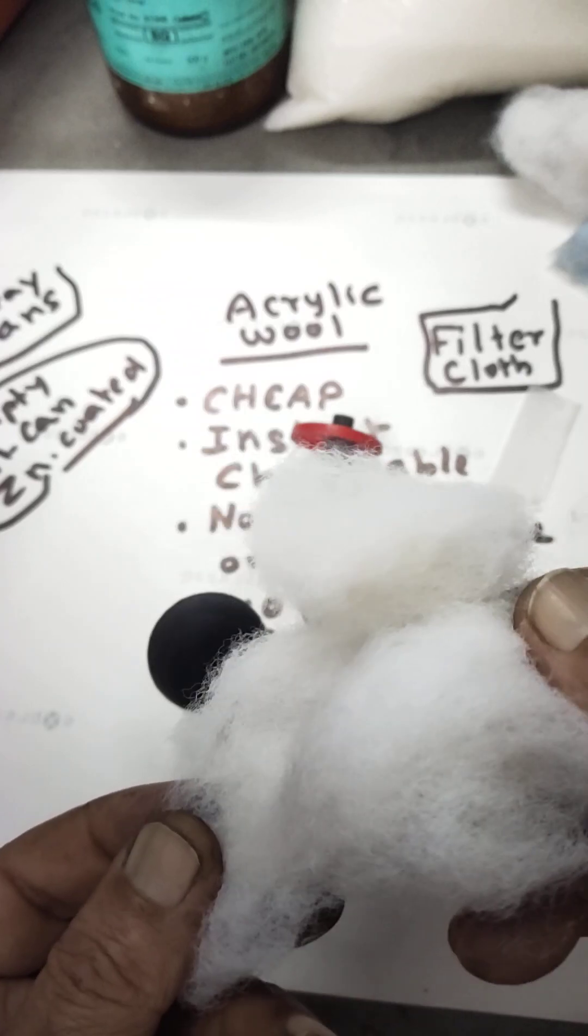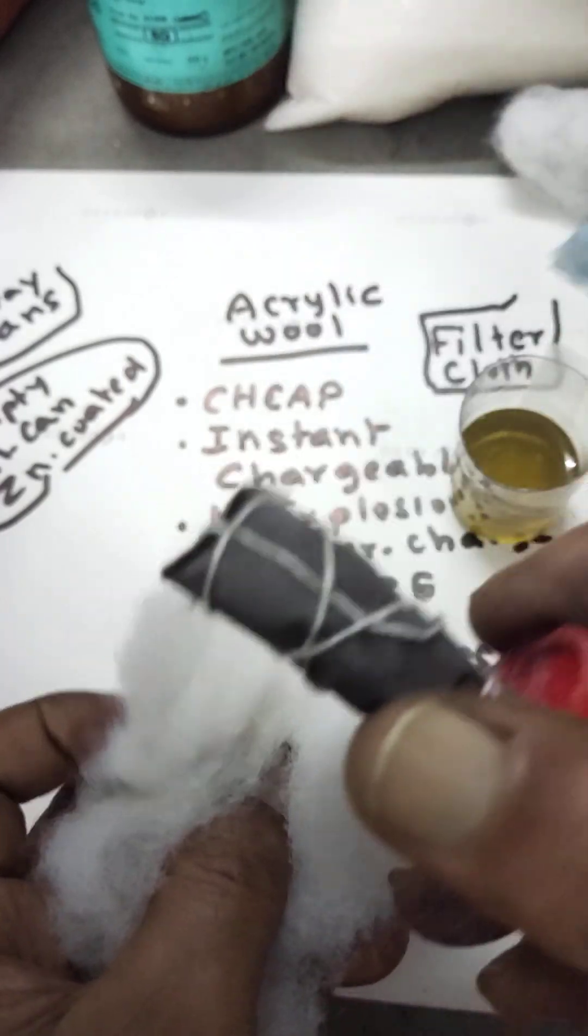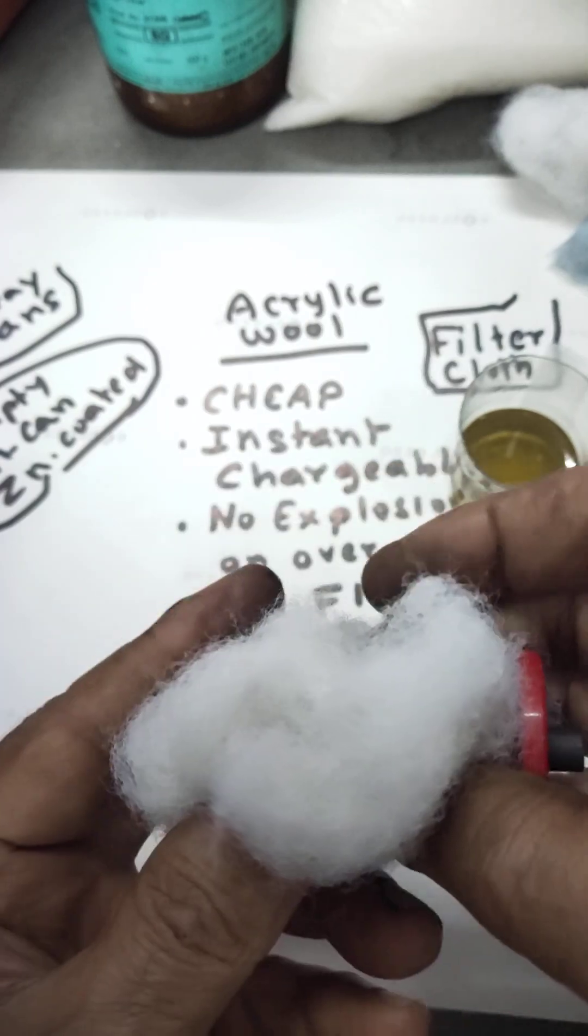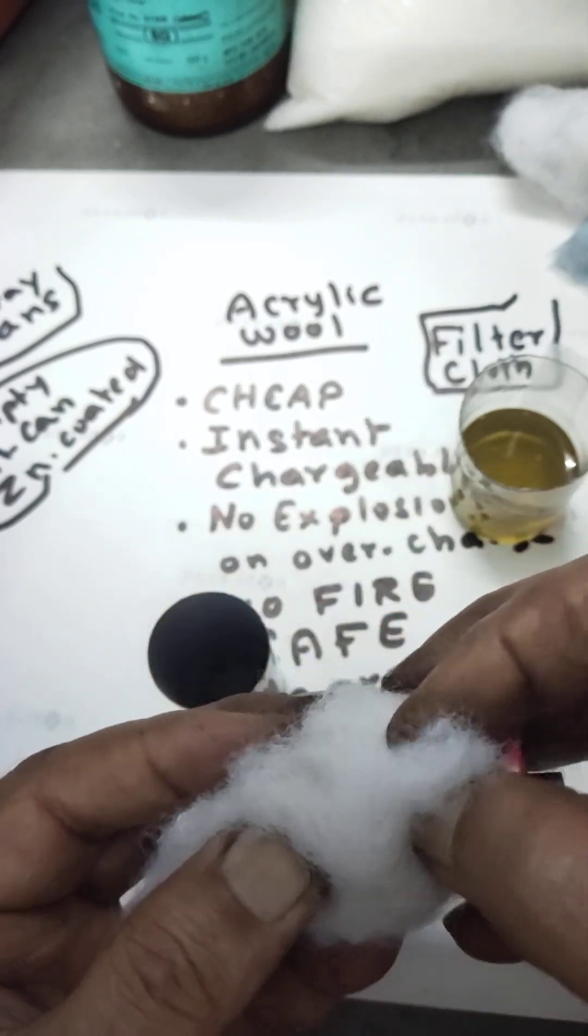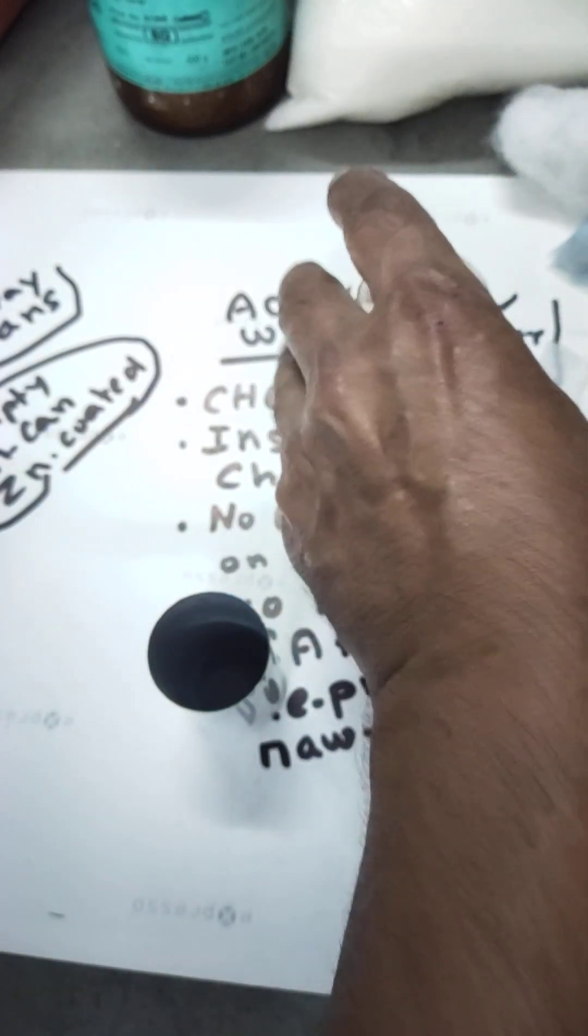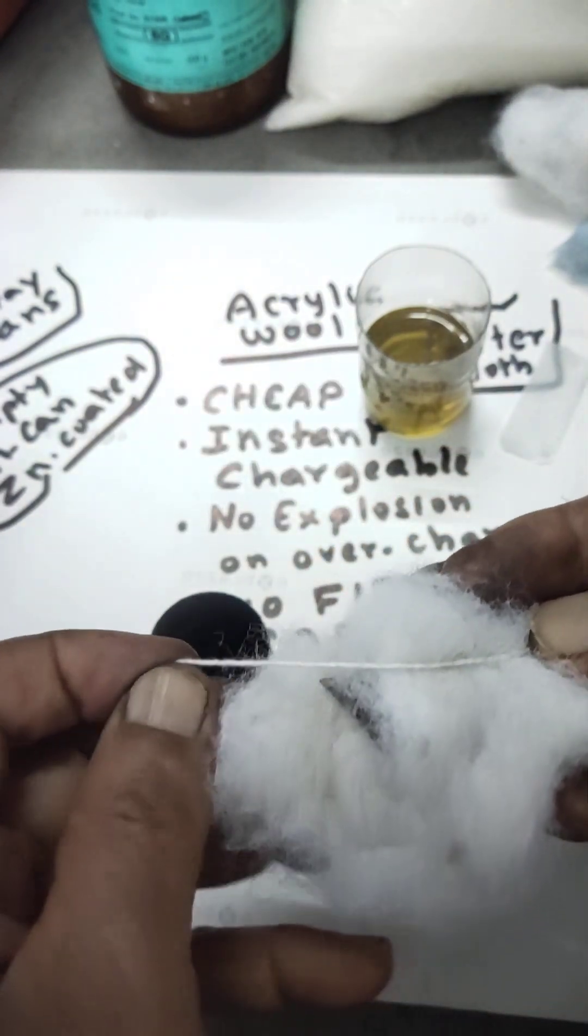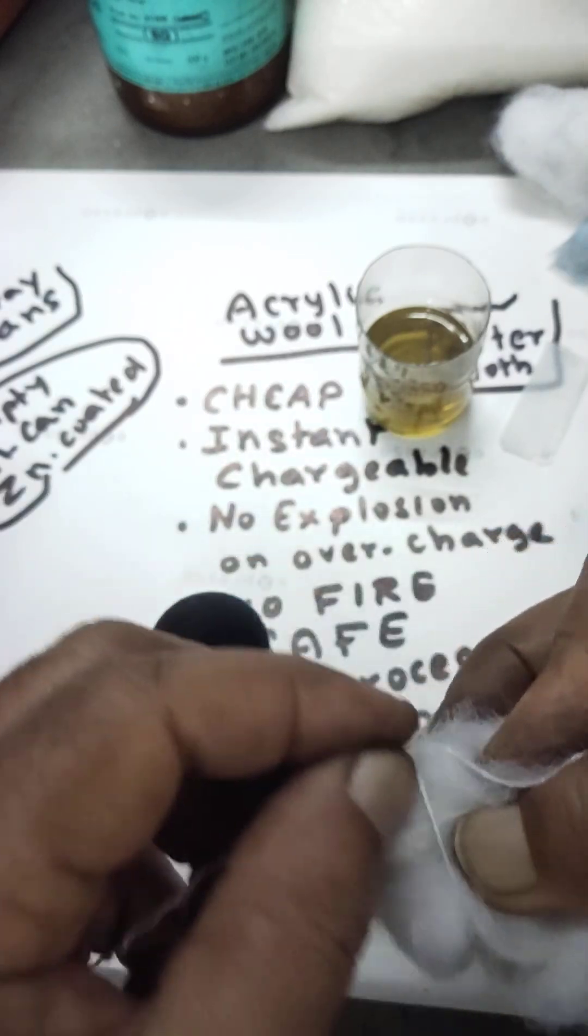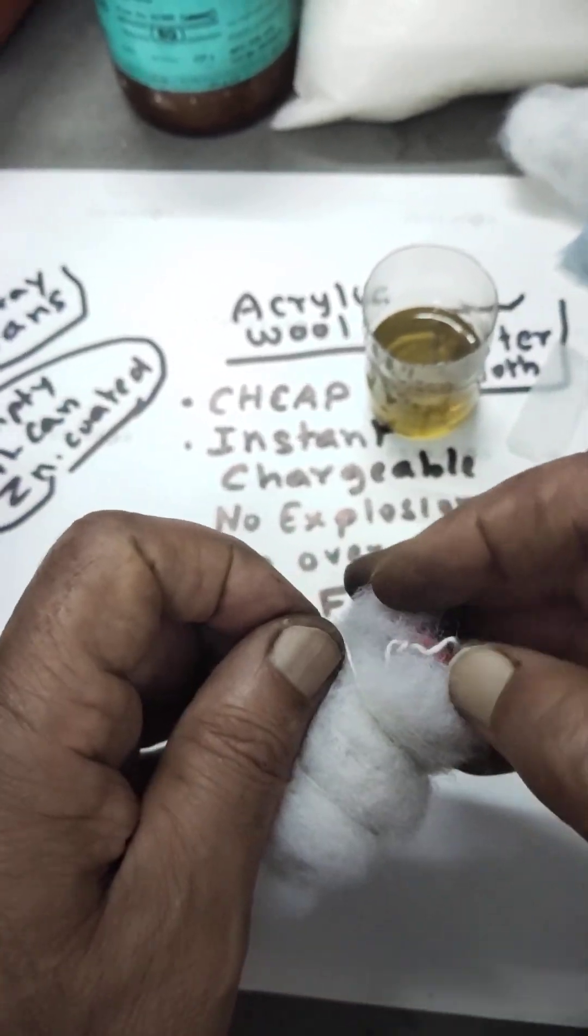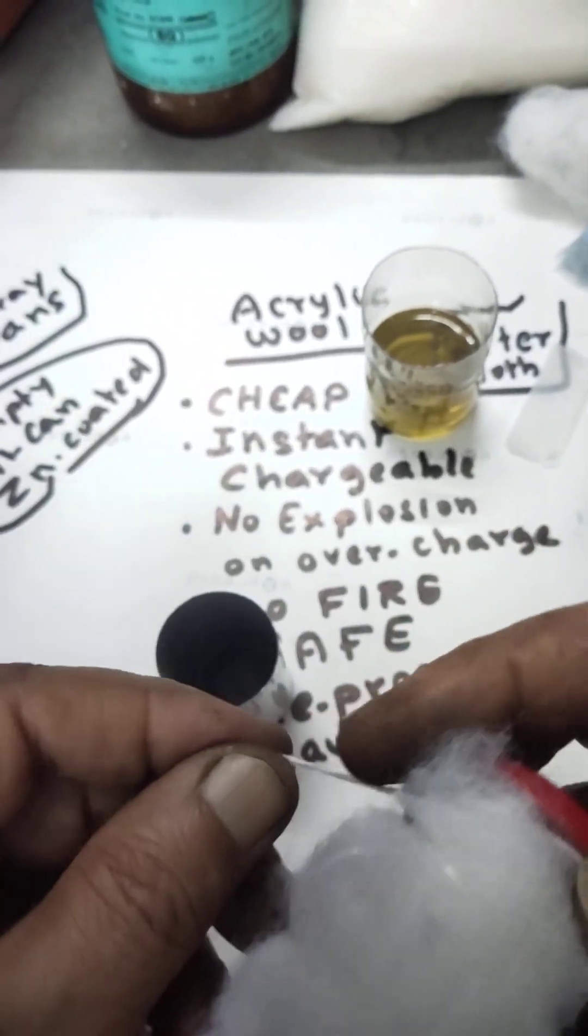Now I'm going to tie this wool with the positive electrode. I'm tying it using any thread, whatever thread is available. I'm tying it like this to keep it intact - otherwise it will slip.